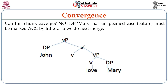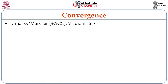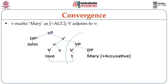So we do the next merge. You can see the next merge in structure 3 on screen, where we have merged little v head to the big VP and also merged the subject John in the specifier position of little v. Little v marks Mary as plus accusative, and little v then adjoins to big V. You can see that Mary has been marked plus accusative and big V has left a trace behind, head-adjoining to little v.